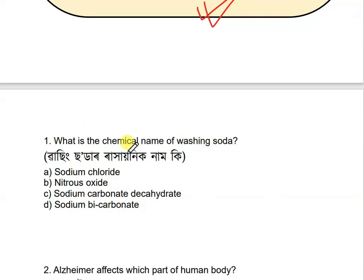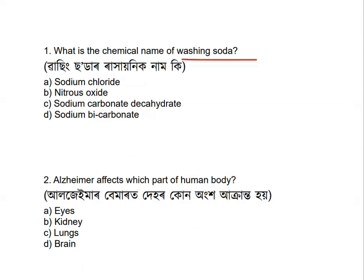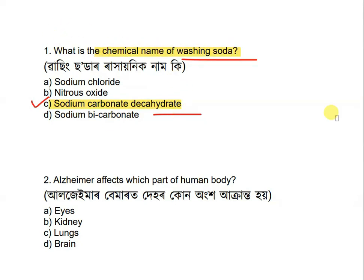Question: What is the chemical name of washing soda? Options: sodium chloride, nitrous oxide, sodium carbonate decahydrate, and sodium bicarbonate. The correct answer is sodium carbonate decahydrate — this is the chemical name of washing soda.